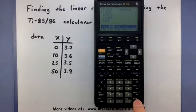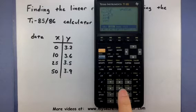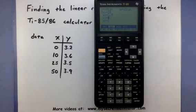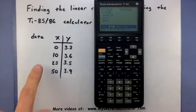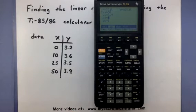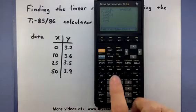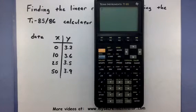25, Enter, 3.5, Enter. And last one, 50, Enter, and 3.9, Enter. All of that data is now entered into the calculator. Let's press Exit, and Exit one more time to go back to our home screen.